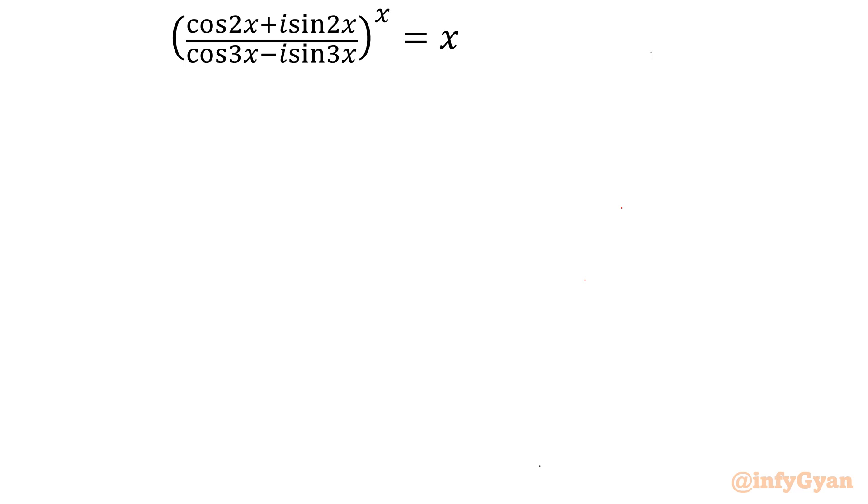I will consider Euler's identity first. E raised to the power i theta equals cos theta plus i sine theta. Similarly, e raised to the power minus i theta can be written as cos theta minus i sine theta.